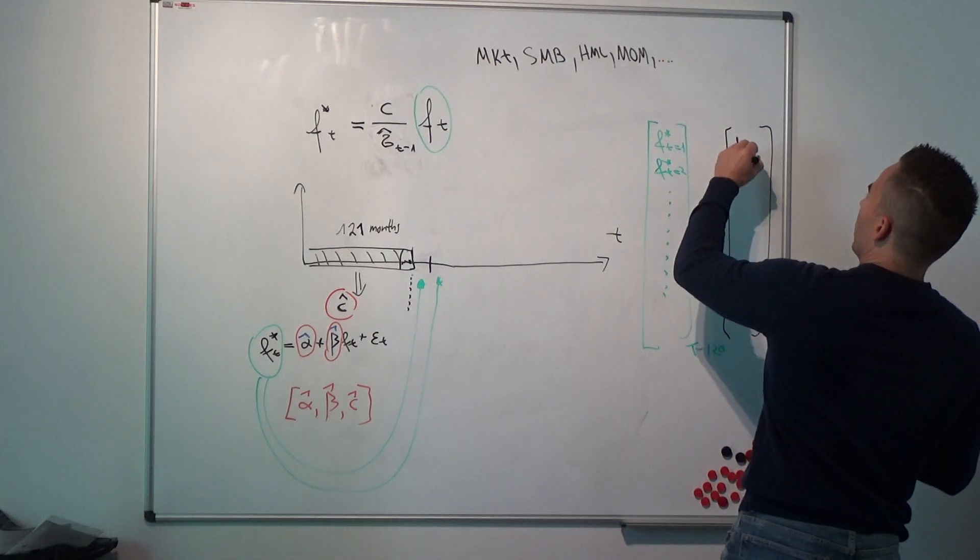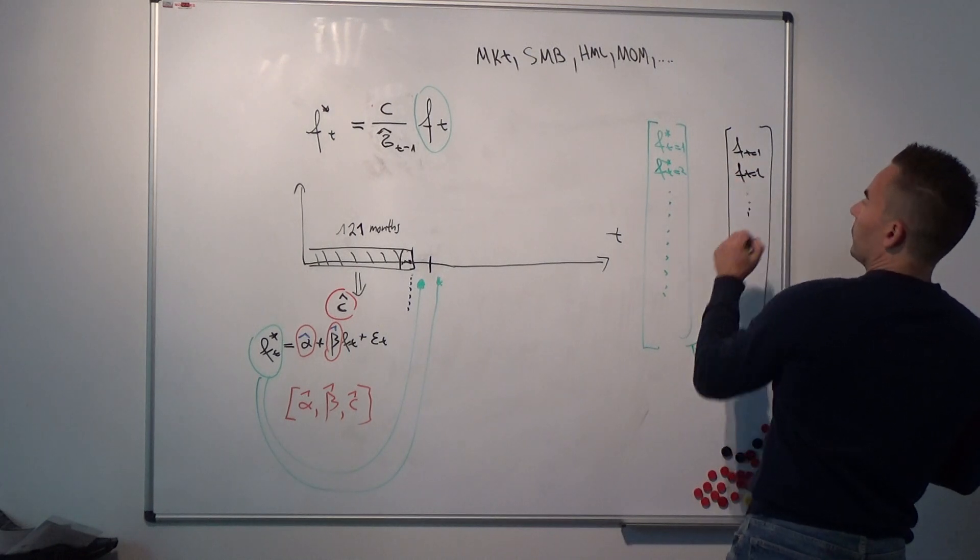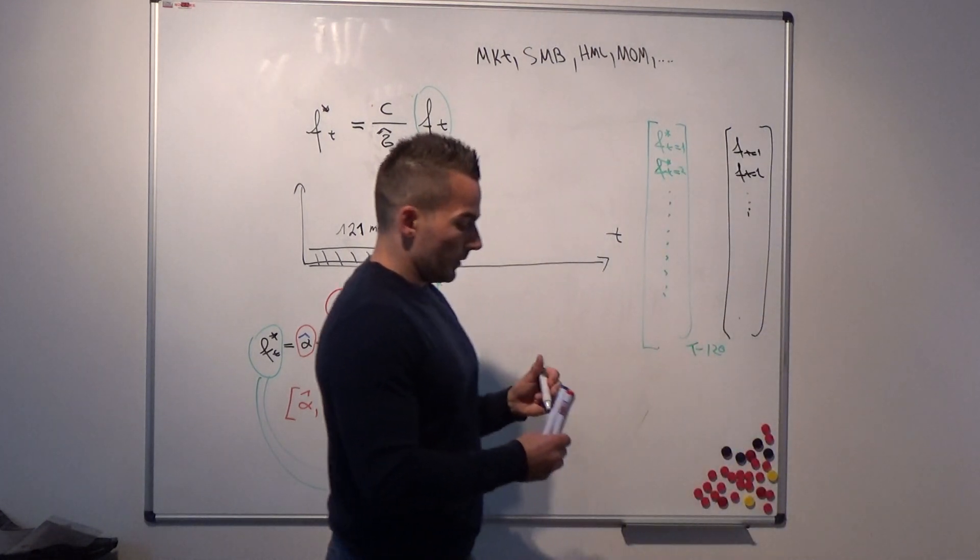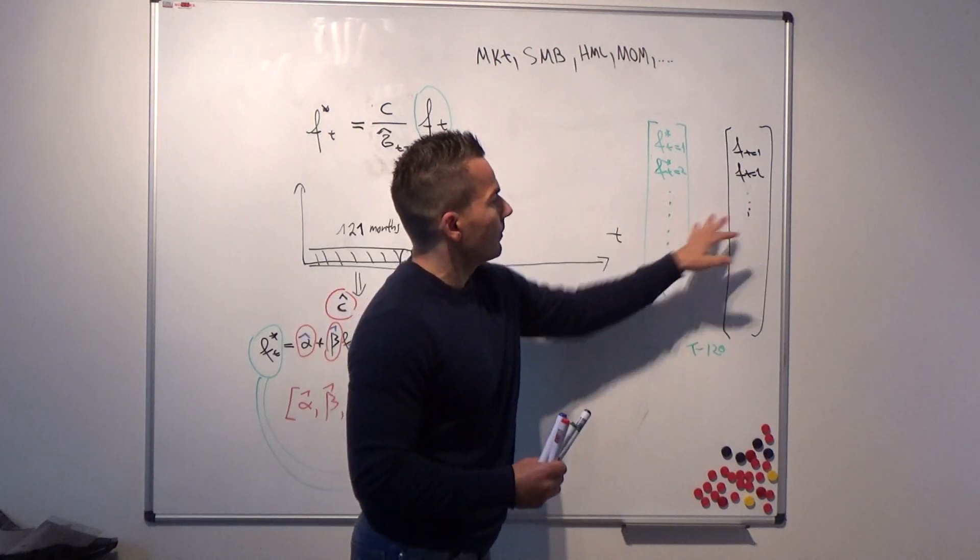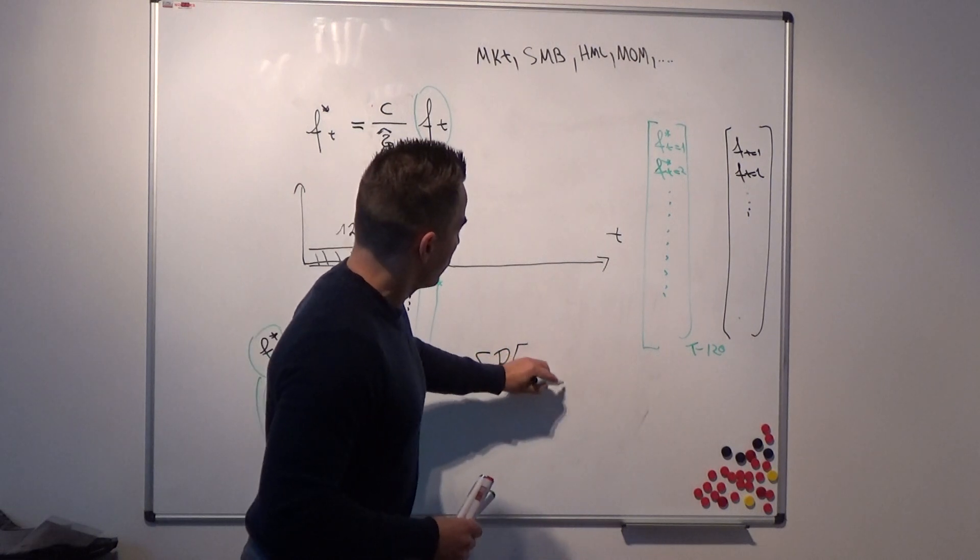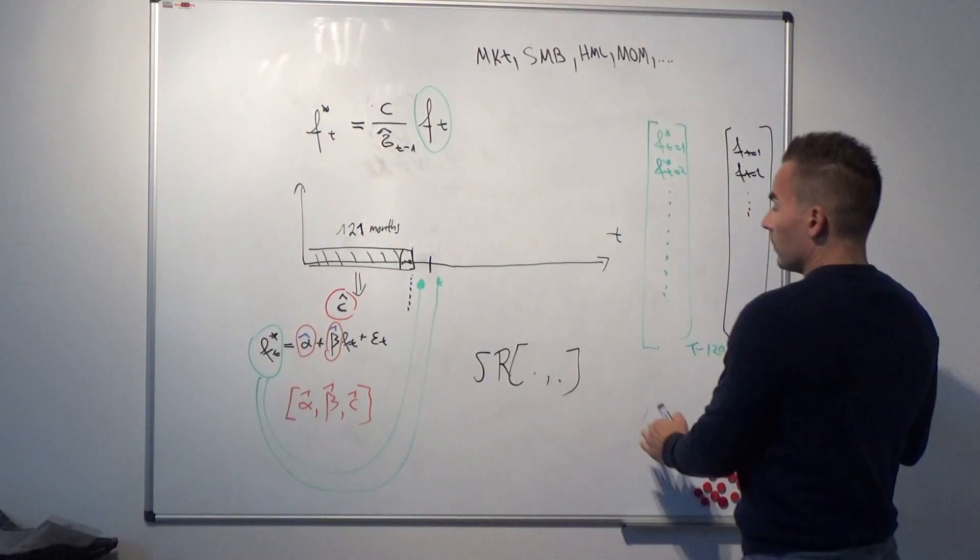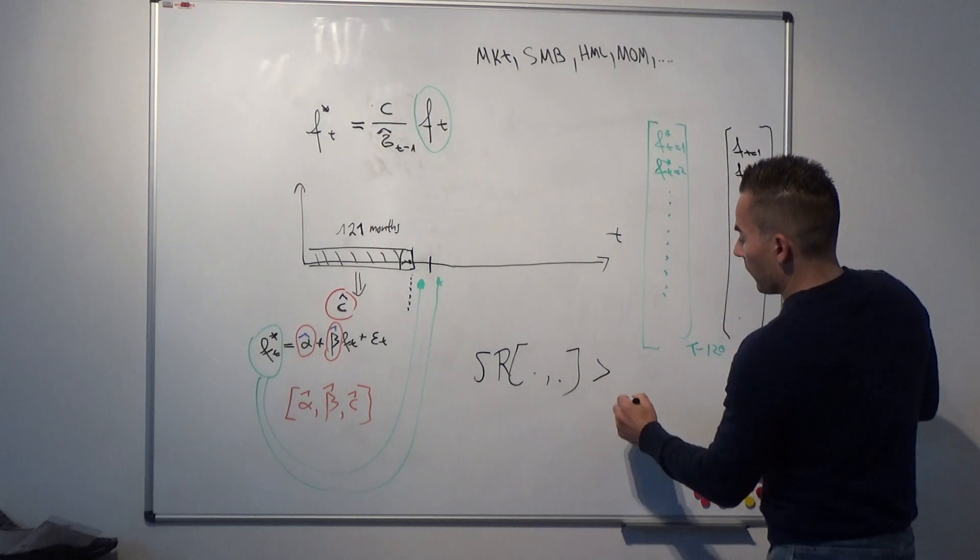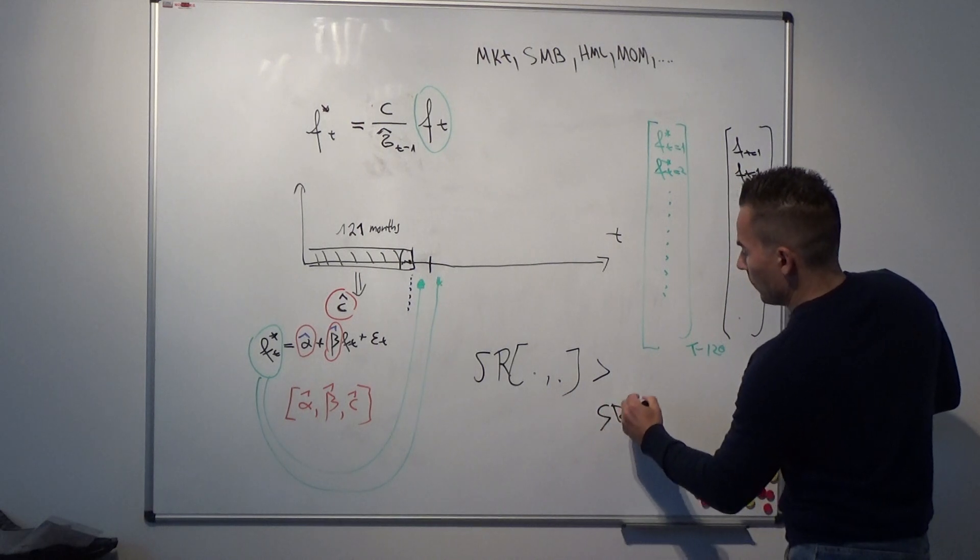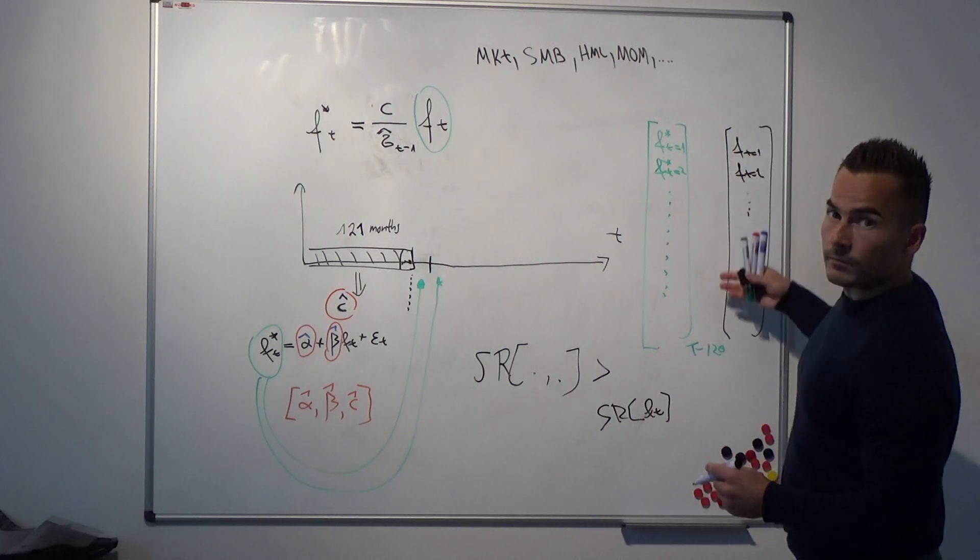Starting with f-t out-of-sample point t1, f-t equal to 2 out-of-sample observation equal to 2, until capital T minus 120. So what we can then do is we can use these two vectors here and estimate the Sharpe ratio of these two guys. And then we compare the Sharpe ratio of these two vectors with the Sharpe ratio of this guy here only, Sharpe ratio of the standard factor given the out-of-sample time window.